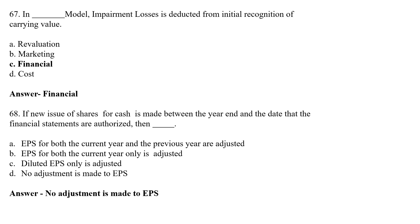If a new issue of shares for cash is made between the year end and the date that the financial statements are authorized, then — Option A: EPS for both current and previous year are adjusted, Option B: EPS for current year only is adjusted, Option C: Diluted EPS only is adjusted, Option D: No adjustment is made to EPS. The correct answer is Option D — No adjustment is made to earning per share.